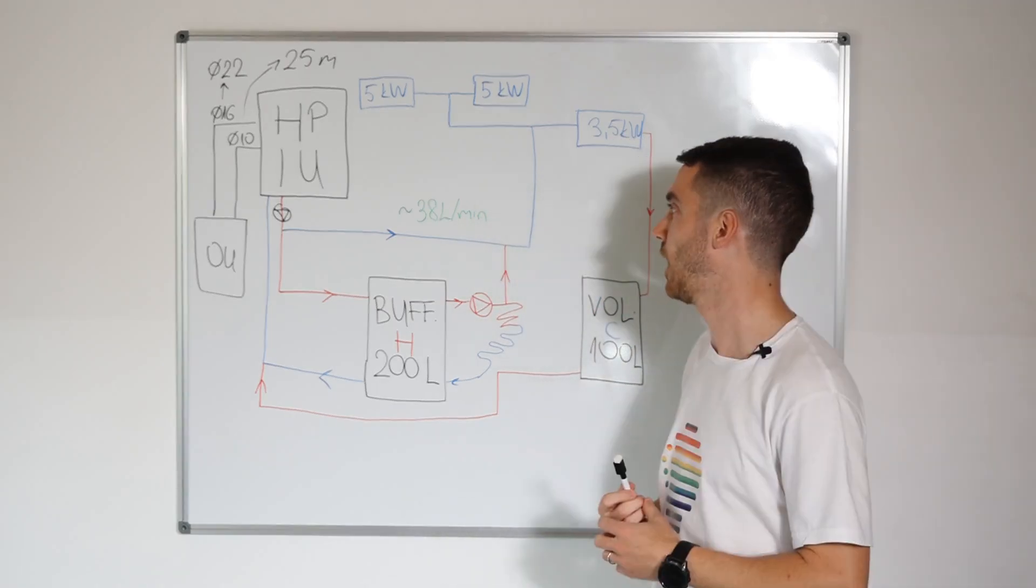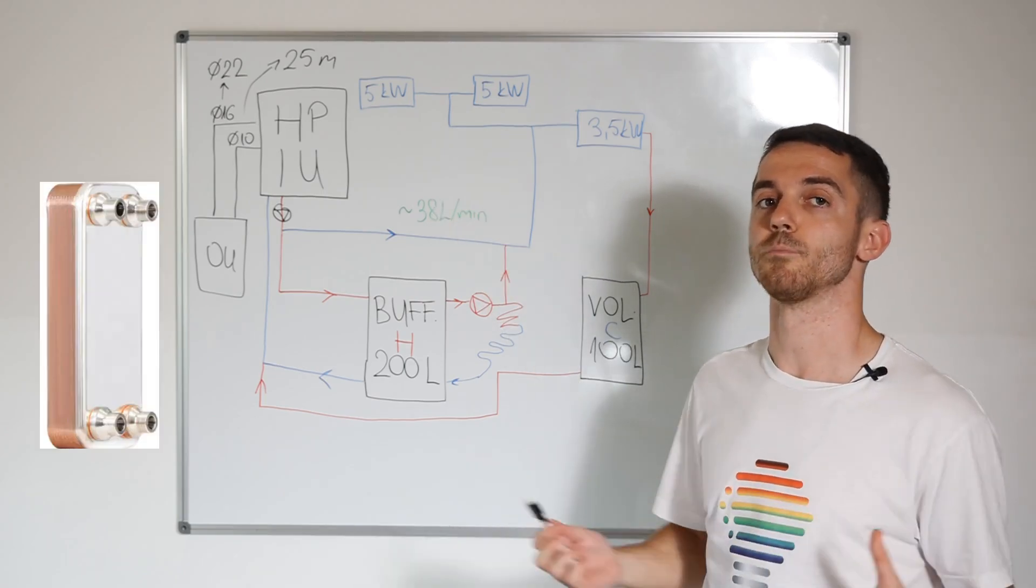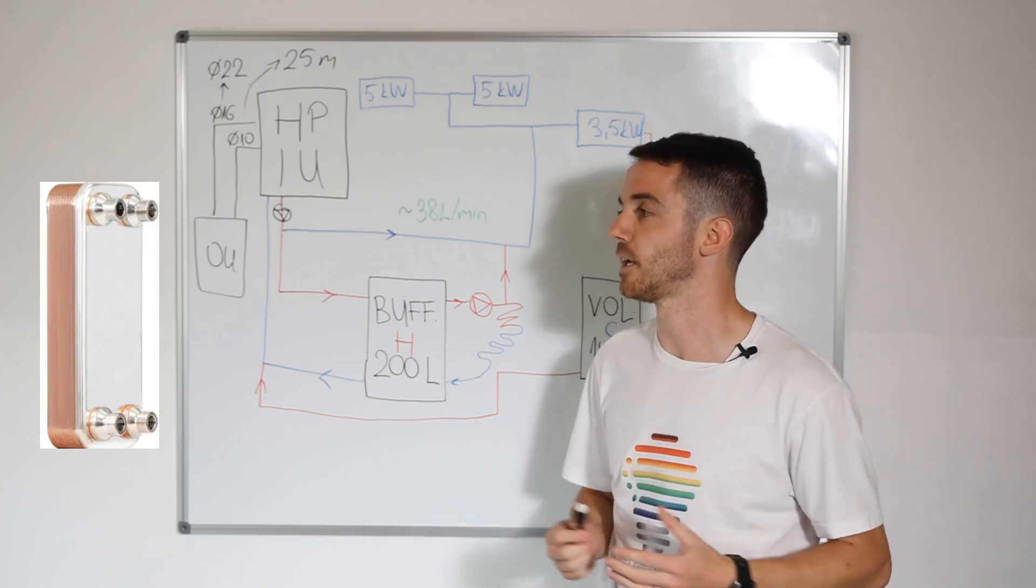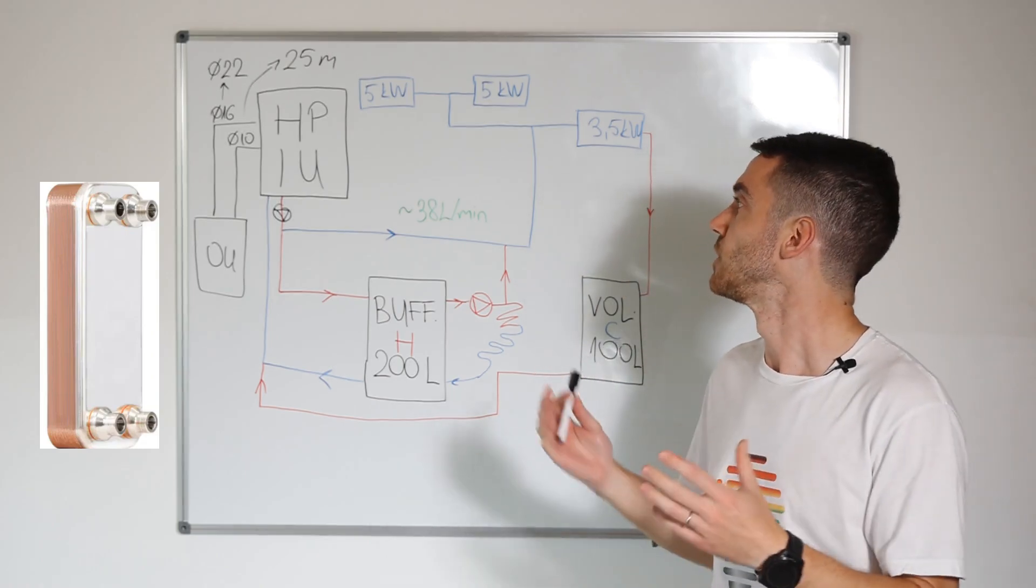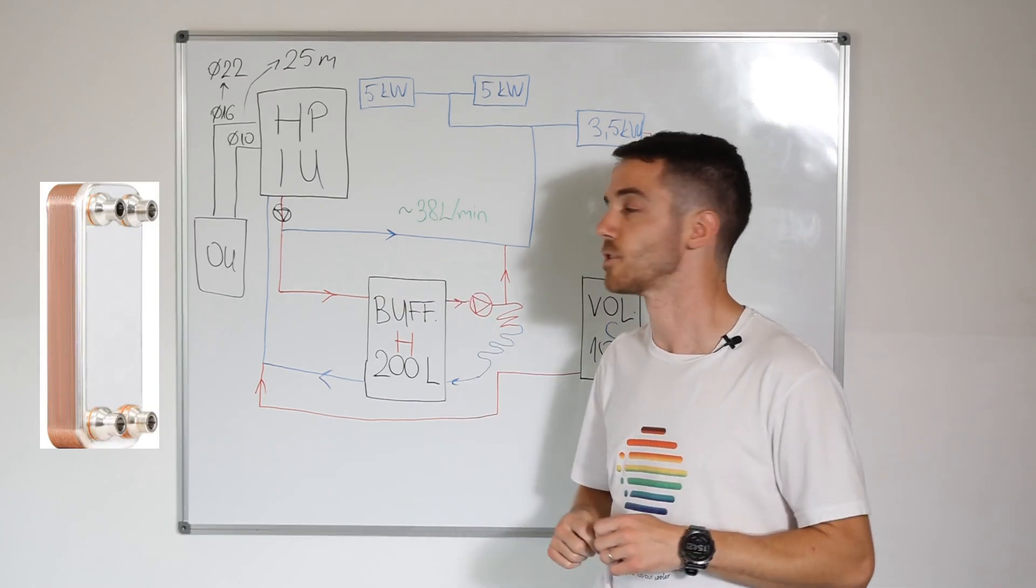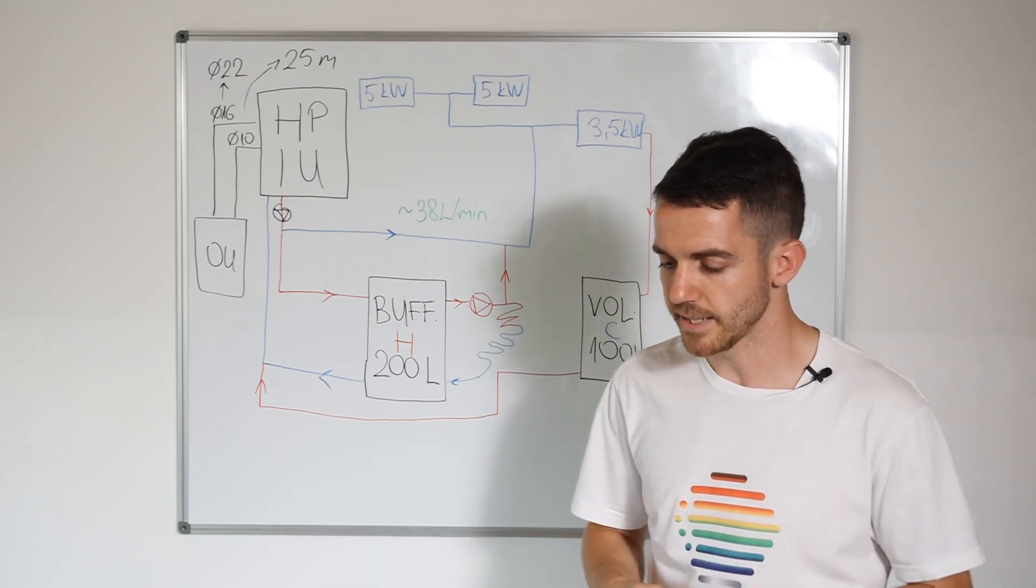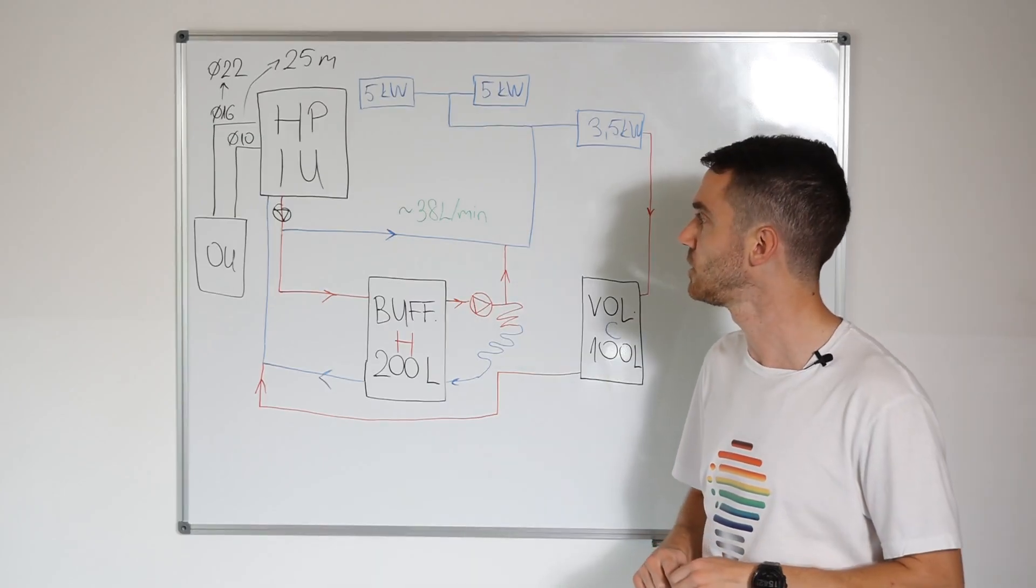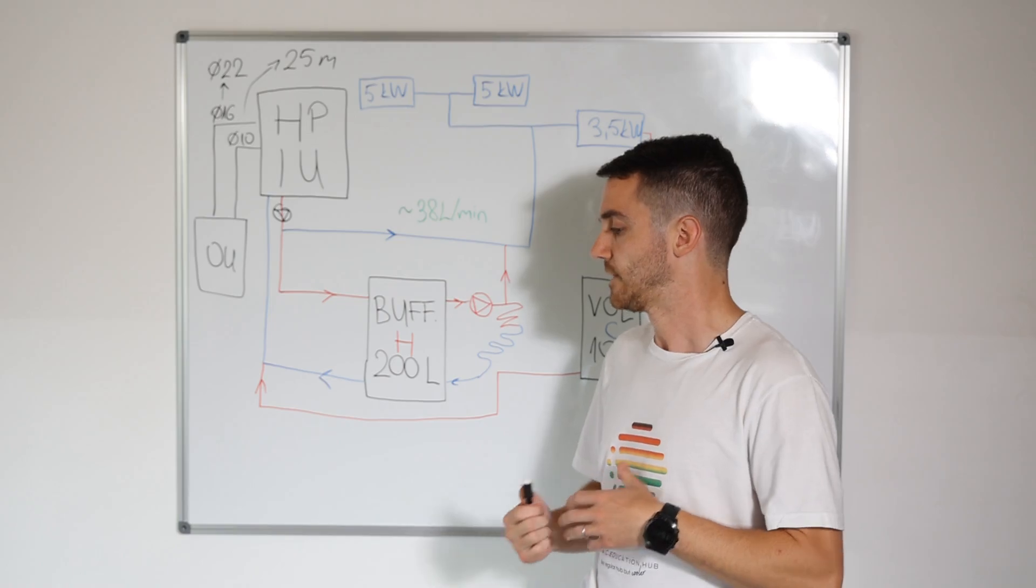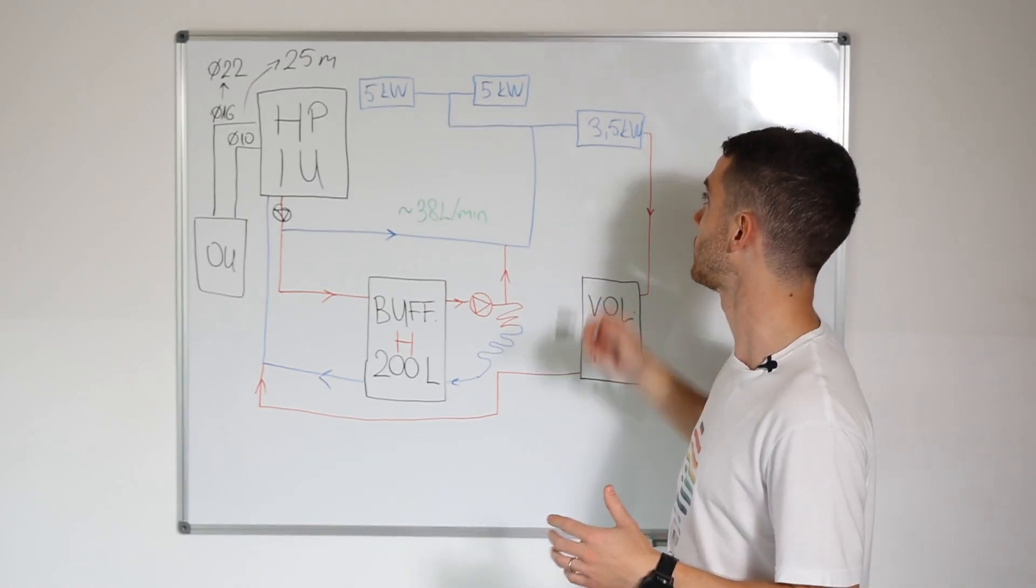So after a few times, customer said that plate heat exchanger from indoor unit was broken. Usually it means that it was around zero degrees or even lower. And because of the ice, heat exchanger was broken. So they started to go deep. What is going on? And when I came, I said, let's see how it's going.